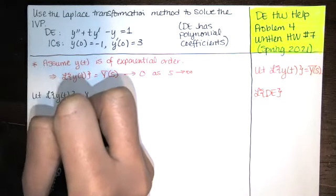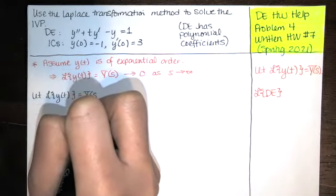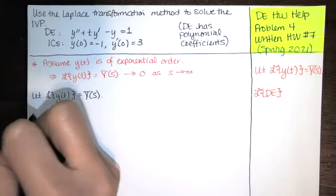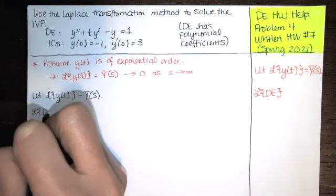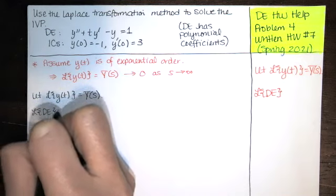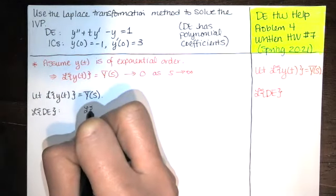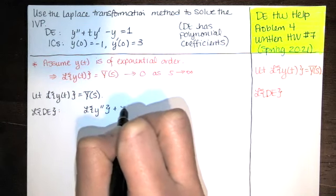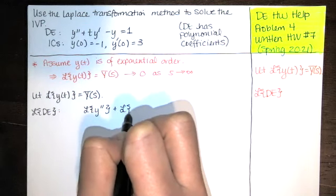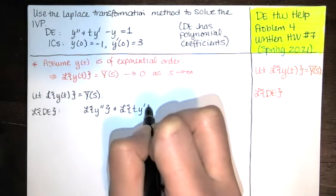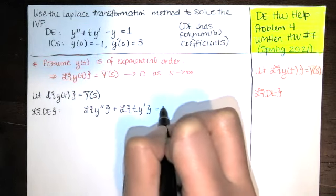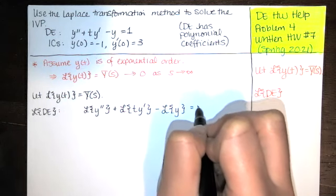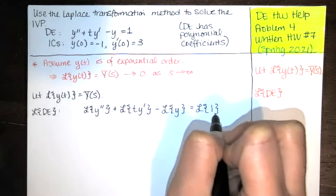We always want to introduce that notation so that anyone who reads our work knows exactly what Y(S) represents. So the Laplace transform of Y double prime, plus the Laplace transform of T times Y prime, minus the Laplace transform of Y, equals the Laplace transform of one.